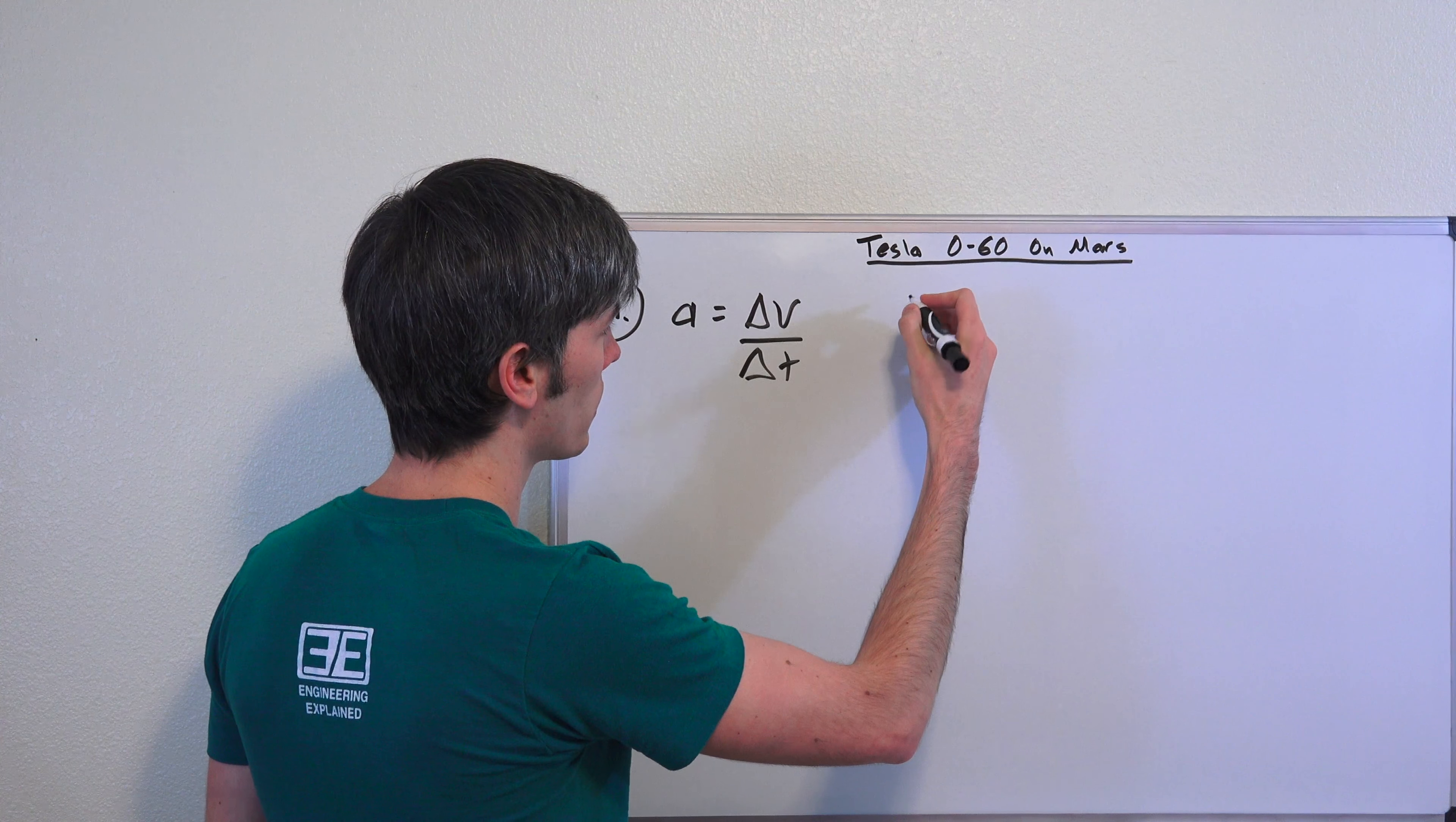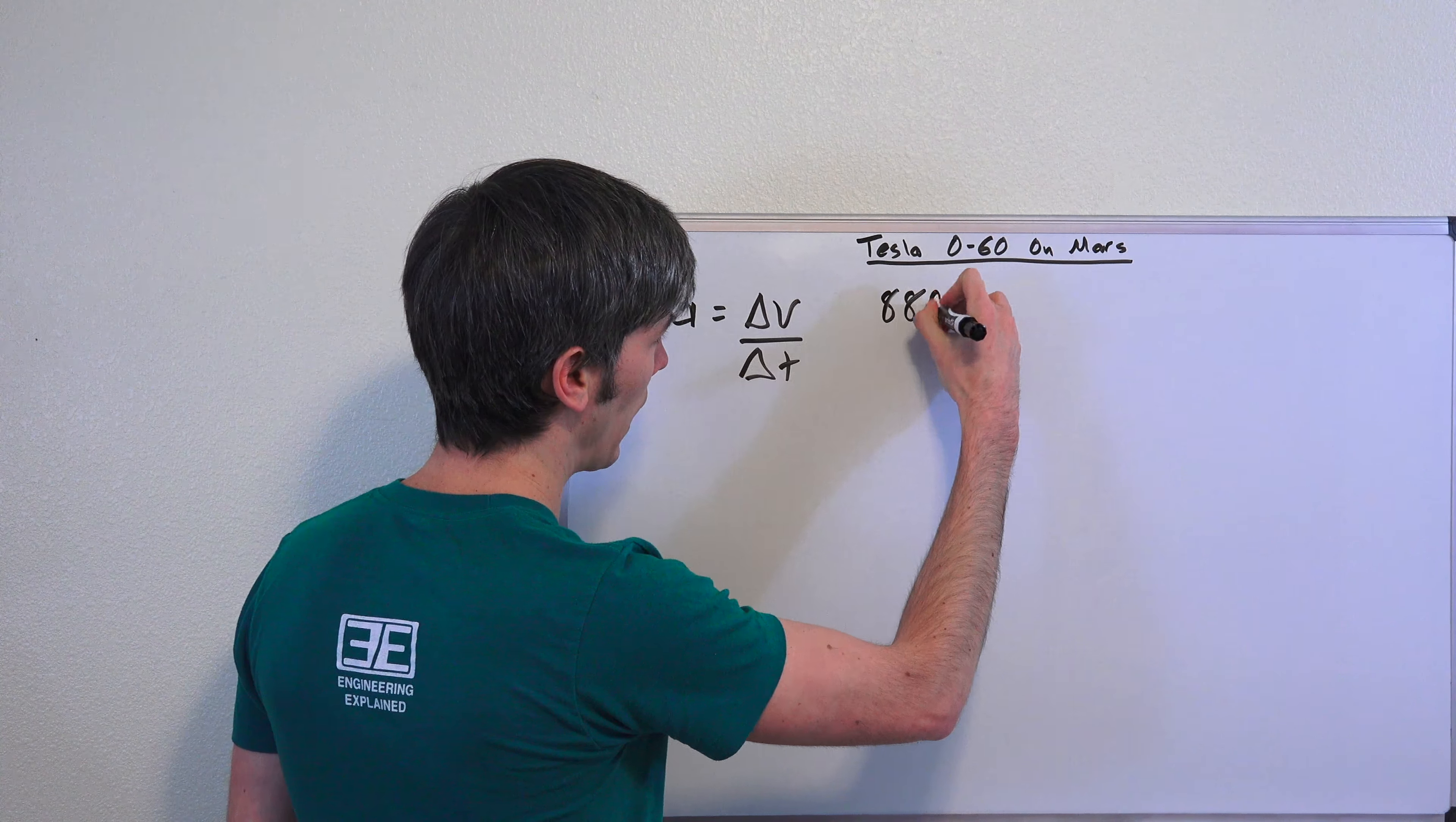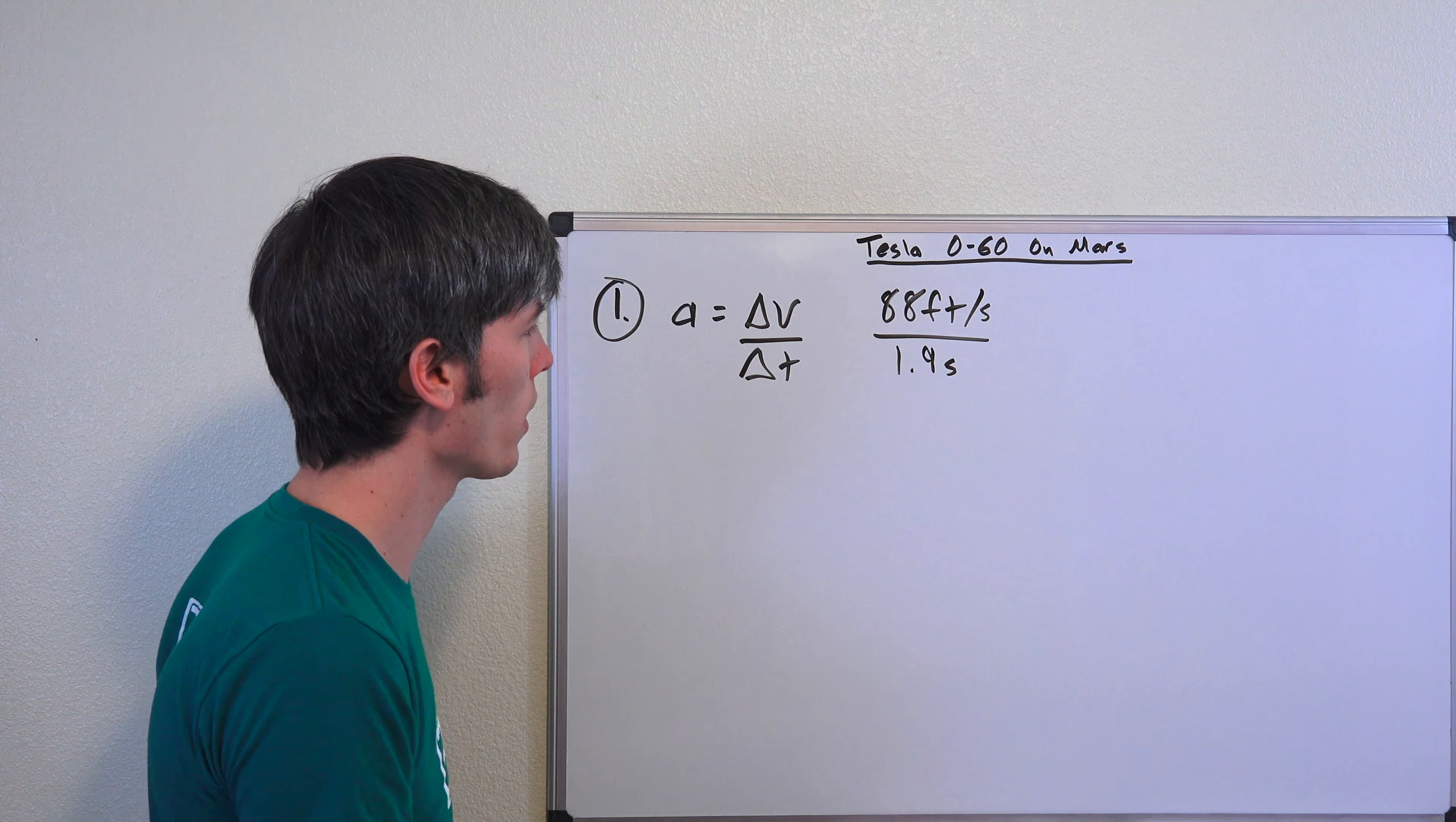And so this vehicle can accelerate to 60 miles per hour, so we're going to say that's our change in velocity, 60 miles per hour, otherwise worded as 88 feet per second—we're just going to change the units there. But that's 60 miles per hour. And Tesla says it can do this in just 1.9 seconds.